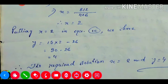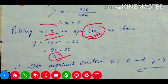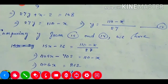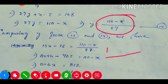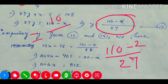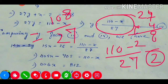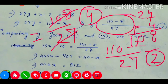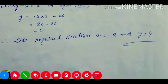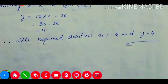We put x equals 2 in equation number three: y equals 15 into 2 minus 26, which is 30 minus 26 equals 4. So y equals 4. We can verify by putting x equals 2 in equation number four: (110 minus 2) divided by 27 equals 108 divided by 27 equals 4. Both give the same result. Therefore the required solution is x equals 2 and y equals 4.